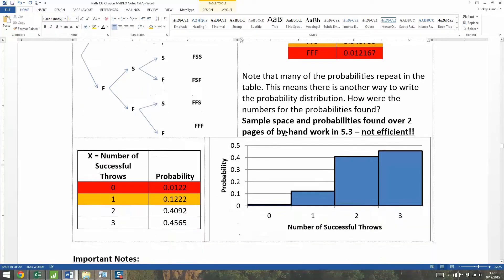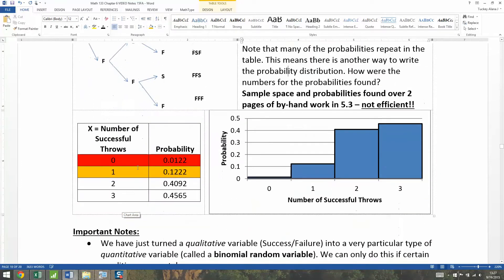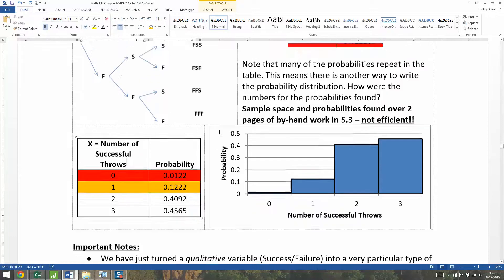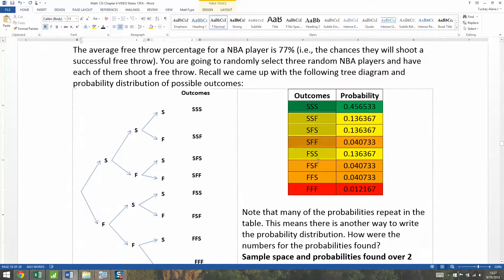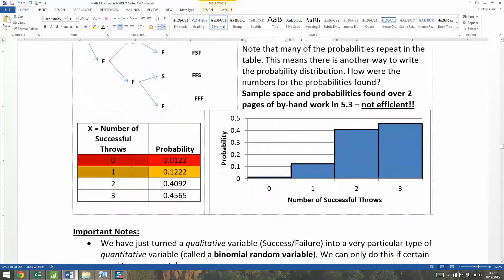What we're going to do is take the sample space from chapter five - success, success, and all that stuff - and convert it into a random variable that's discrete. Now, the successes and failures is a qualitative thing - success, fail, those are words. And we want to change it into a quantitative thing: zero, one, two, three, and so on. And that's exactly what we're going to do.